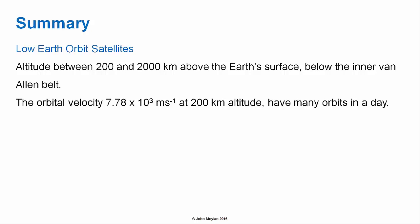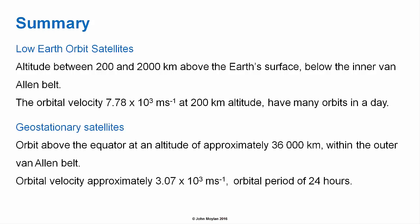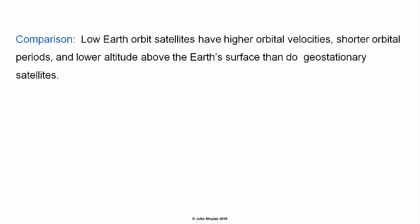In summary: low Earth orbit satellites orbit at between 200 and 2,000 kilometers above the Earth's surface, below the inner Van Allen belt, with orbital velocities of approximately 7.78 × 10³ meters per second near 200 km altitude, completing many orbits per day. Geostationary satellites orbit above the equator at approximately 36,000 kilometers within the outer Van Allen belt, with an orbital velocity of approximately 3.07 × 10³ meters per second and an orbital period of 24 hours. LEO satellites have higher orbital velocities, shorter orbital periods, and lower altitude than geostationary satellites.